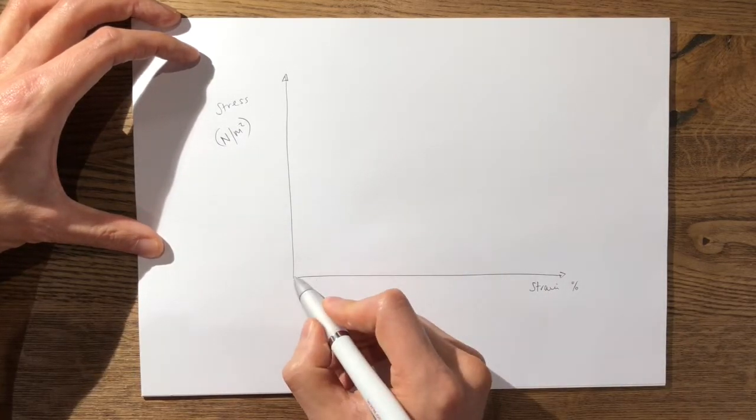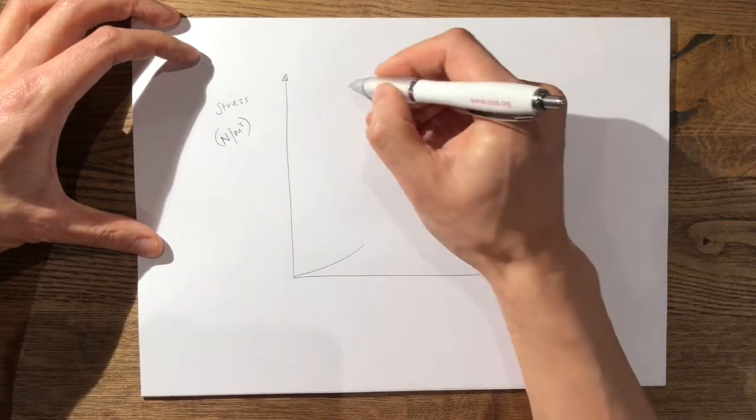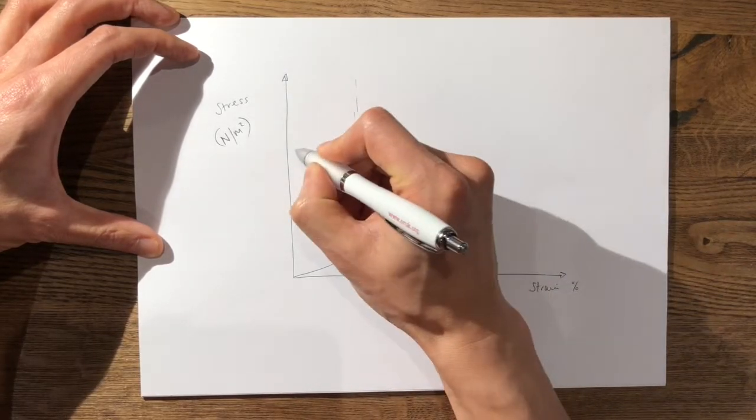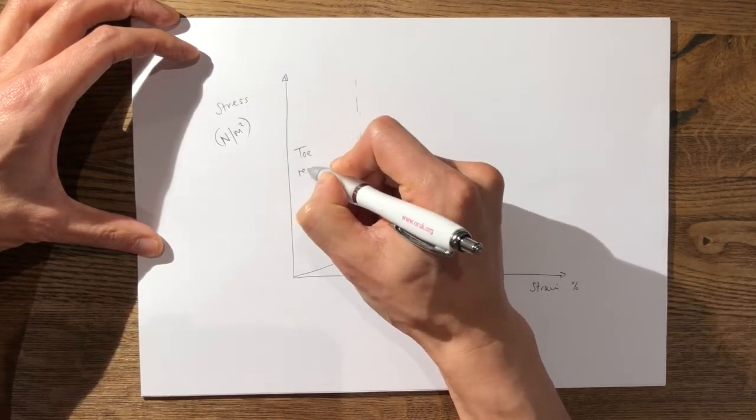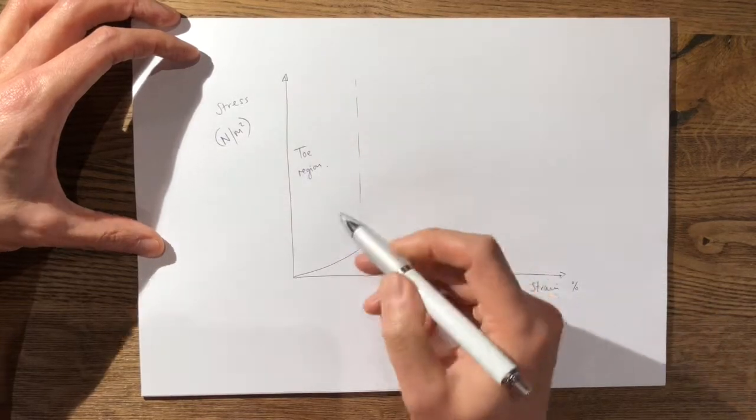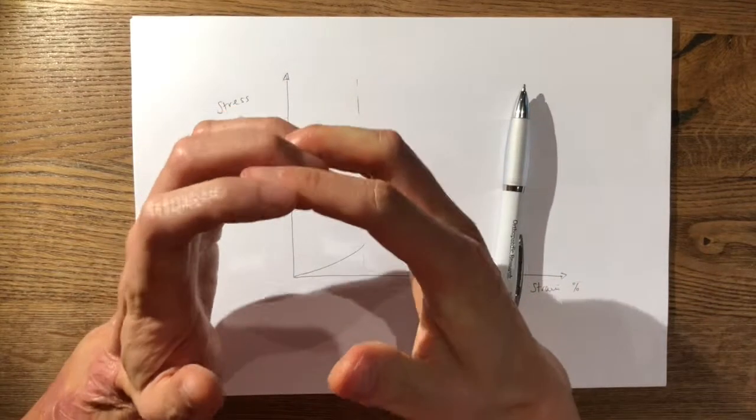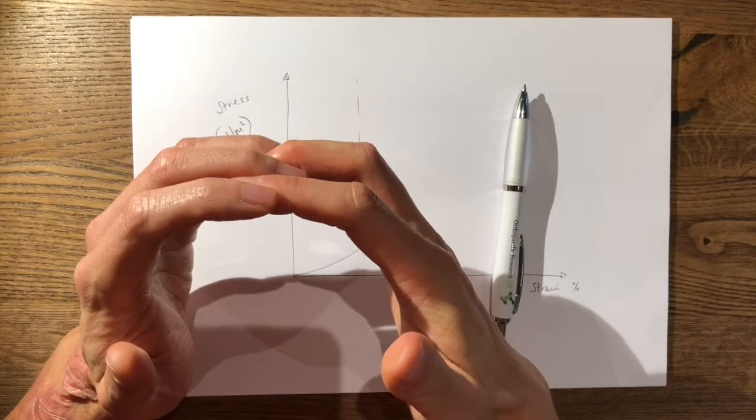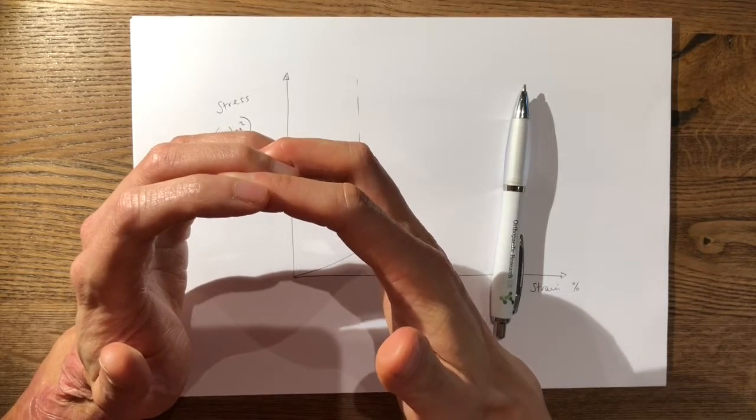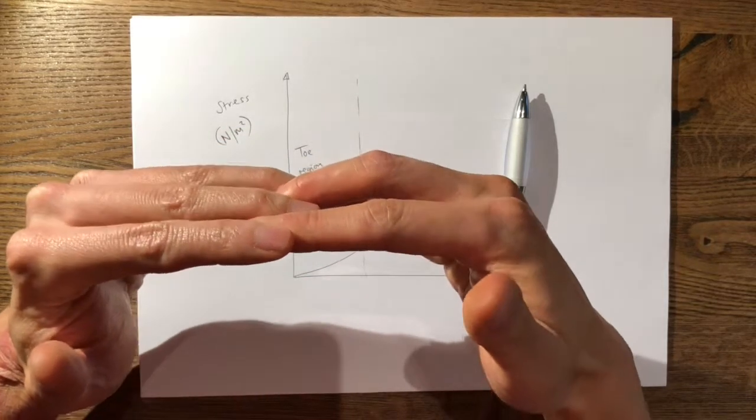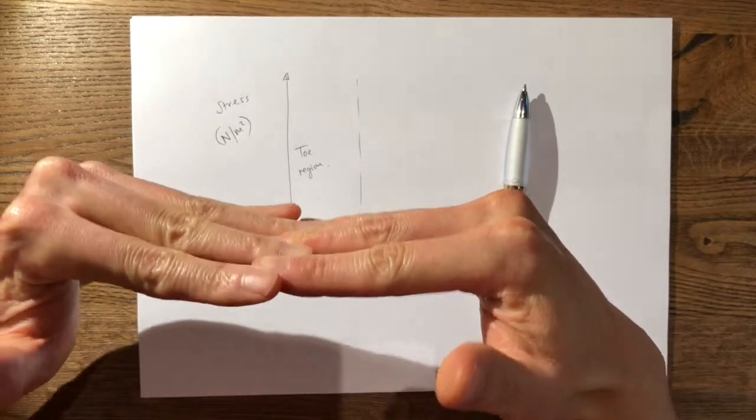So the first region of the curve is known as the toe region. The toe region represents the area of the curve where you have crimped fibres of the tendon. And as you gradually load it in tension you get uncrimping of these fibres.